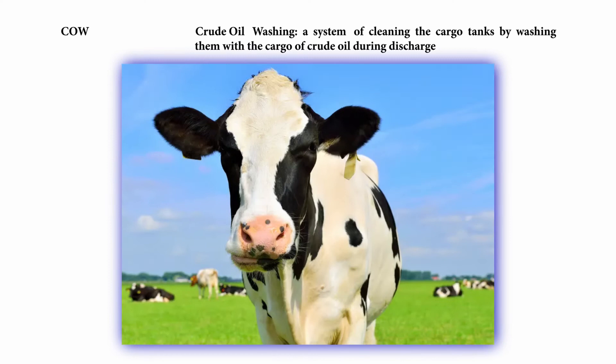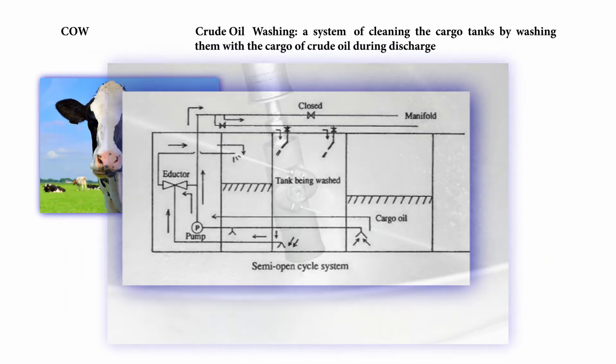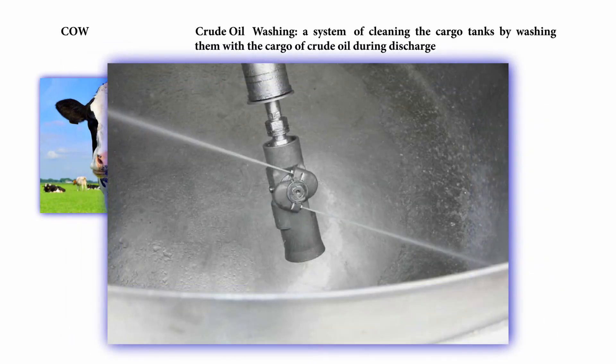COW or C-O-W: crude oil washing, a system of cleaning the cargo tanks by washing them with the cargo of crude oil during discharge.